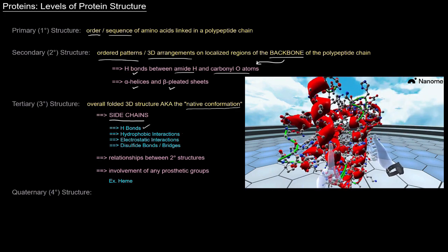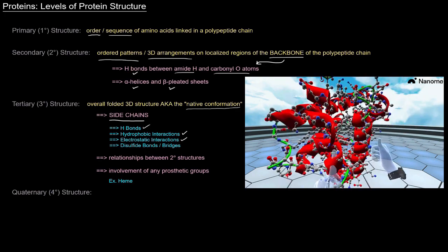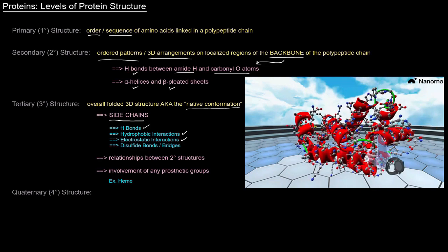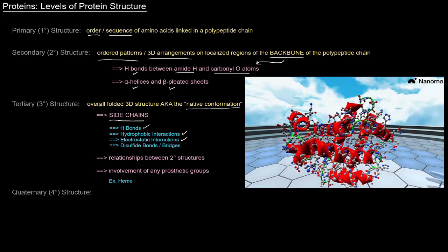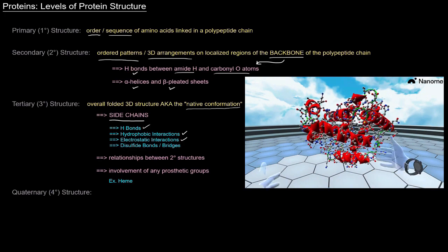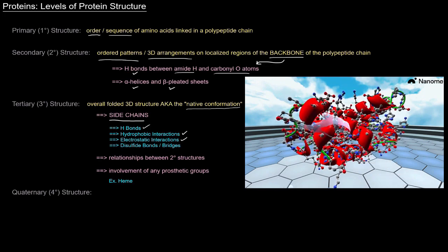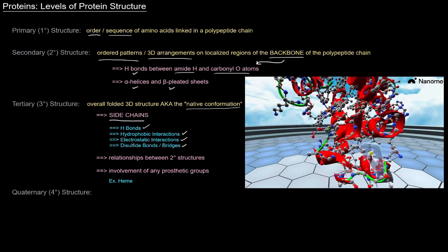And of course, there are hydrogen bonds. There's hydrophobic interactions. There's electrostatic interactions. All of which are non-covalent. And then there's the covalent bonds that can occur between side chains. And specifically, disulfide bridges between cysteines.